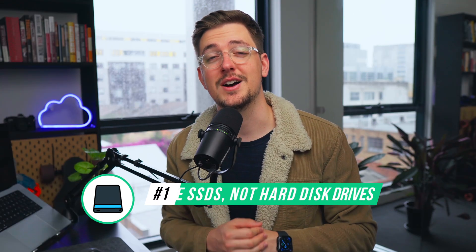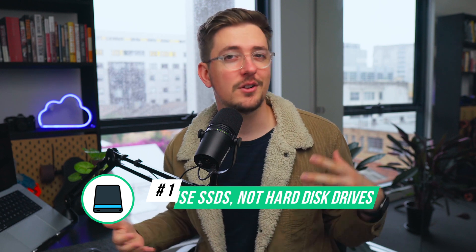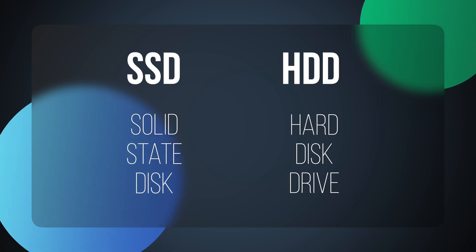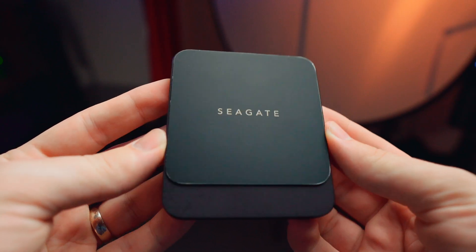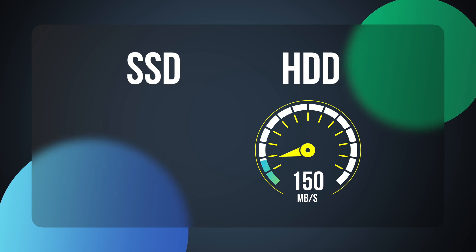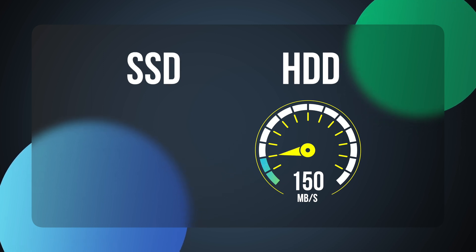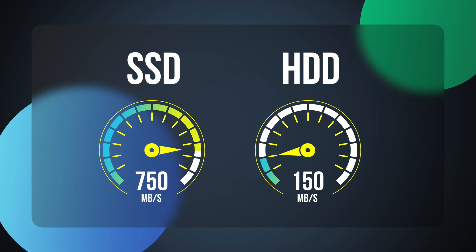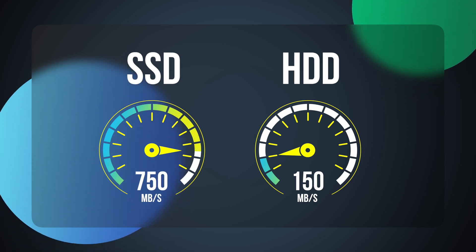Number one: use SSDs, not hard disk drives. SSD stands for solid state disk and HDD stands for hard disk drive. The reason using SSDs is going to speed up your workflow is because the data transfer speeds on SSDs are way faster than hard disk drives. Hard disk drives often can only transfer data at about 80 to maybe 160 megabits per second, while an SSD can transfer data between maybe 200, even up to 1000 megabits per second.